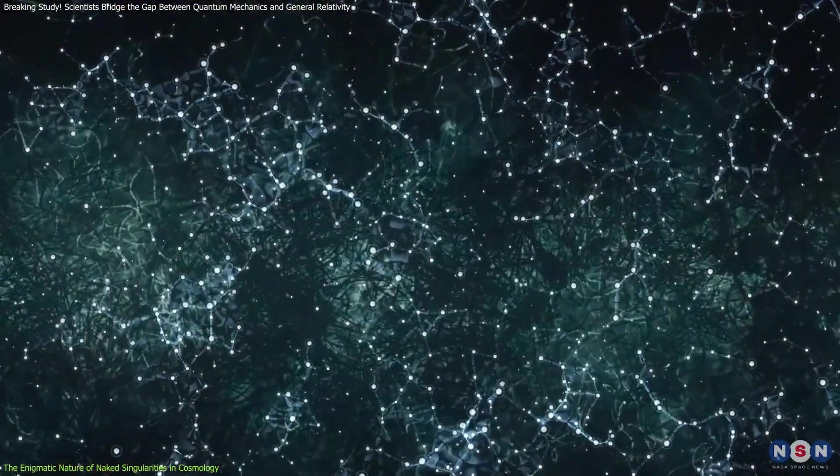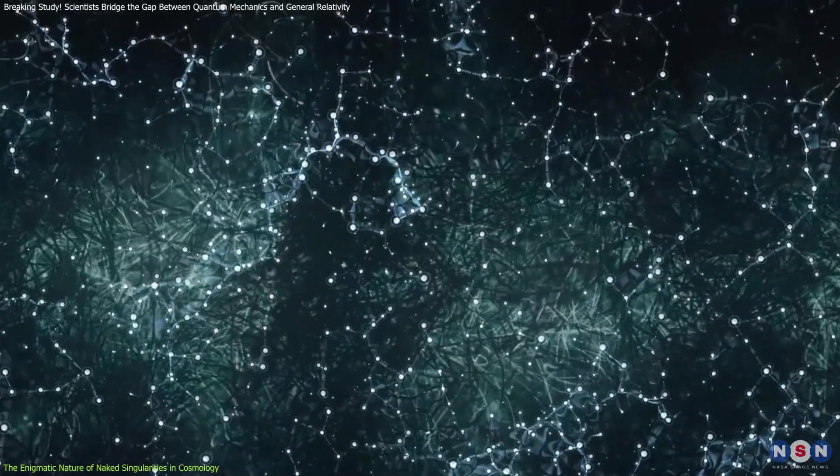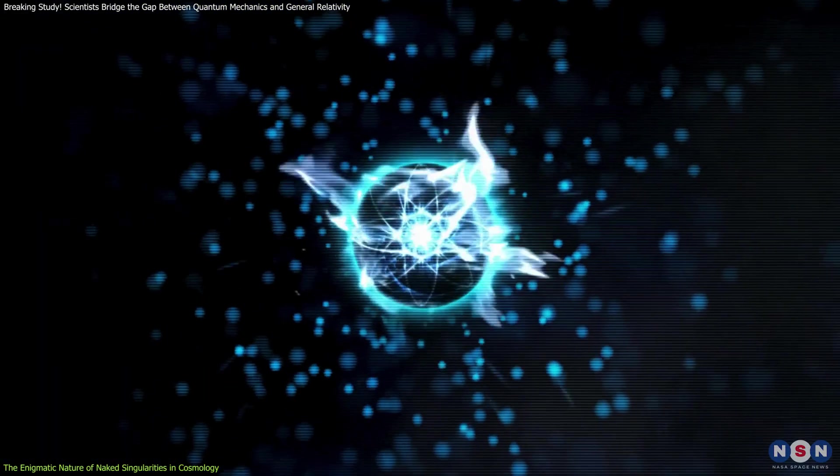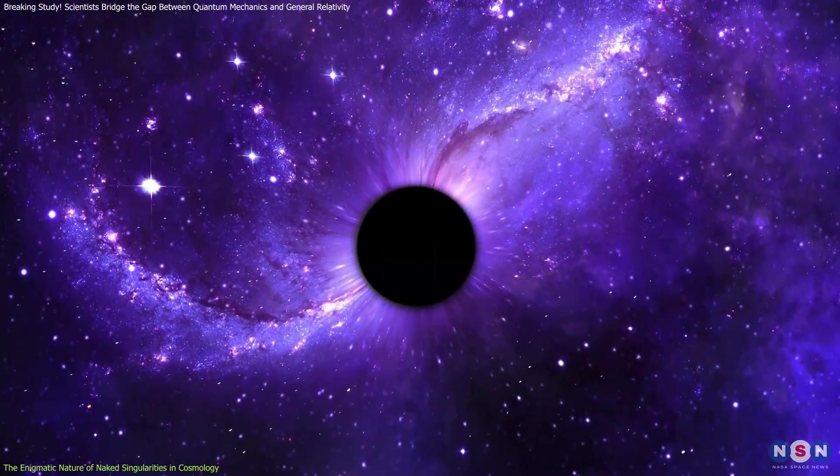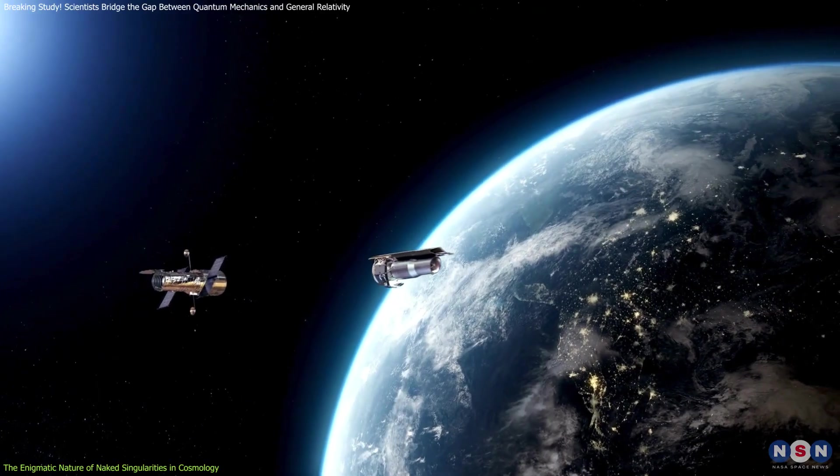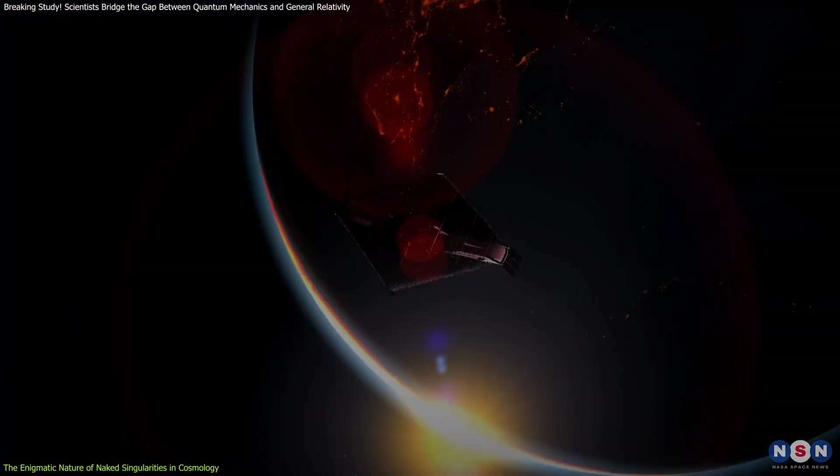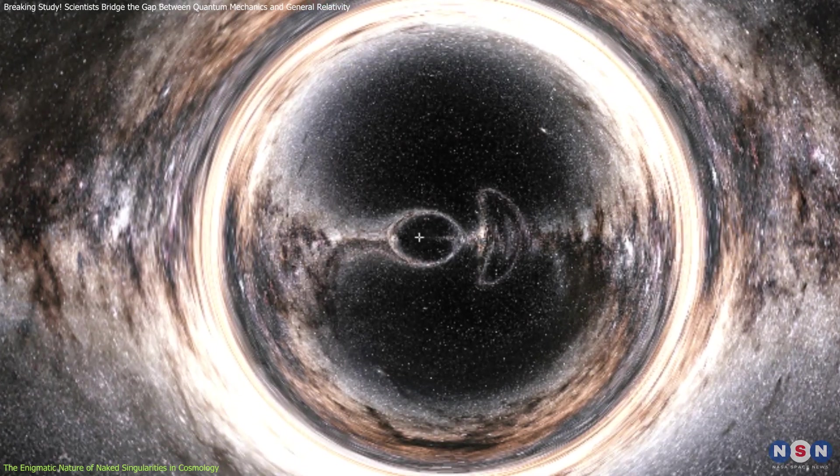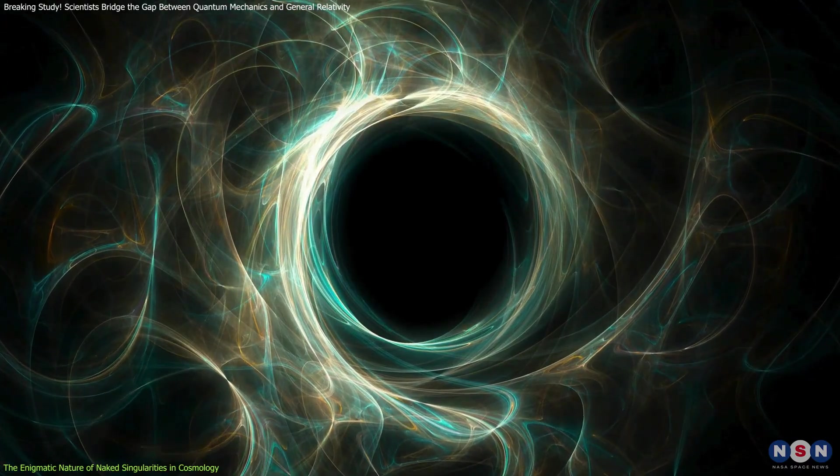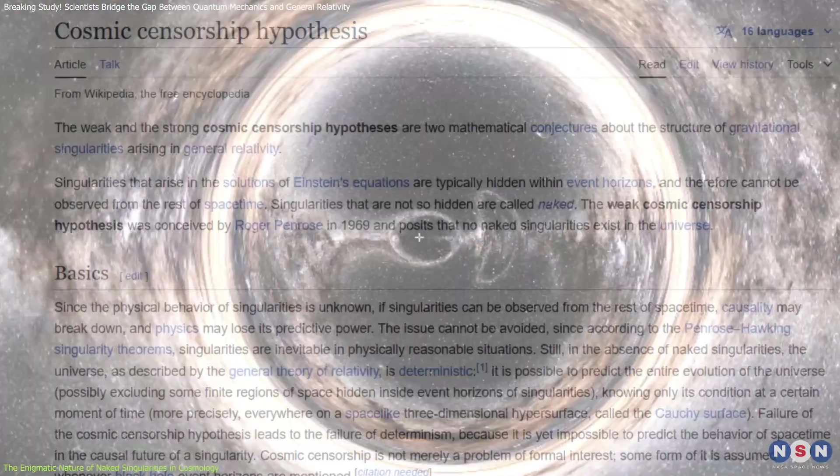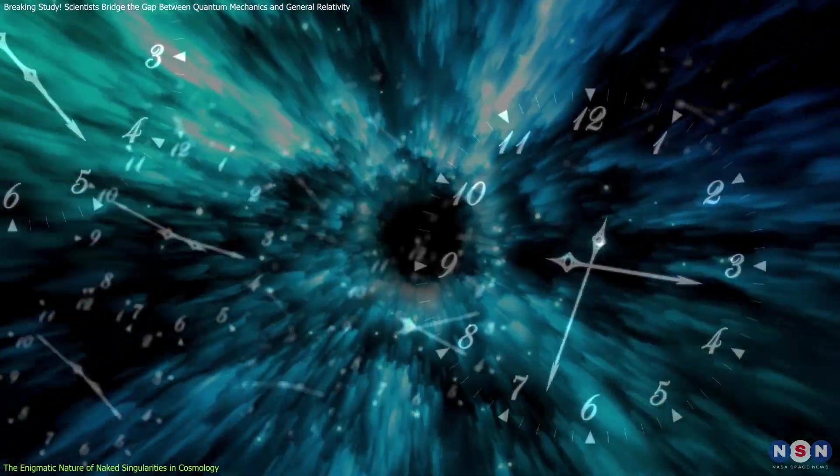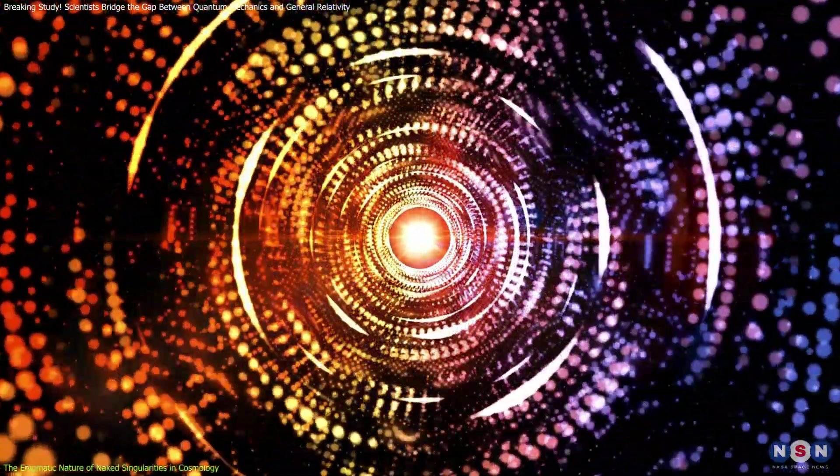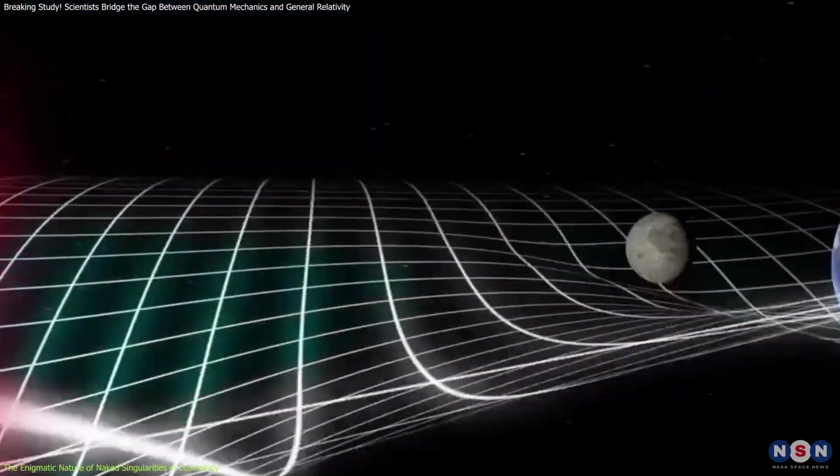To investigate these phenomena, researchers rely heavily on computational modeling and advanced simulations. These tools allow scientists to visualize gravitational collapse and quantum fluctuations, offering clues about how naked singularities form and behave. Furthermore, innovations in observational technology, including next-generation telescopes, are essential for detecting potential signatures of naked singularities. If confirmed, their existence would fundamentally alter our understanding of physics and cosmology. They would challenge the cosmic censorship conjecture, forcing scientists to reconsider the boundaries of space-time. More importantly, they could bridge the gap between quantum mechanics and general relativity, paving the way for a unified theory of everything.